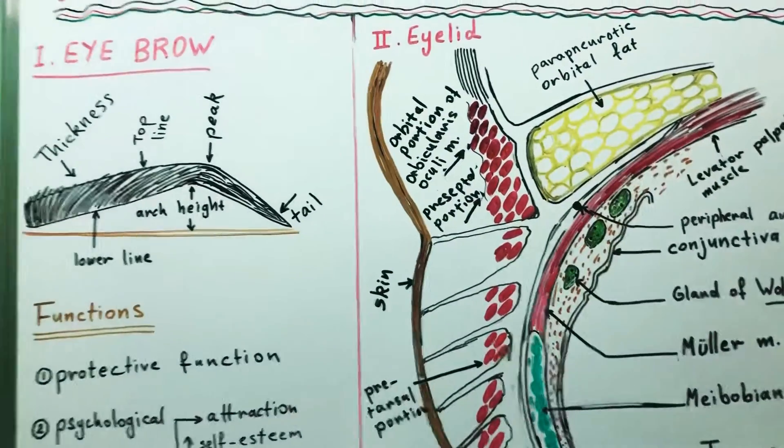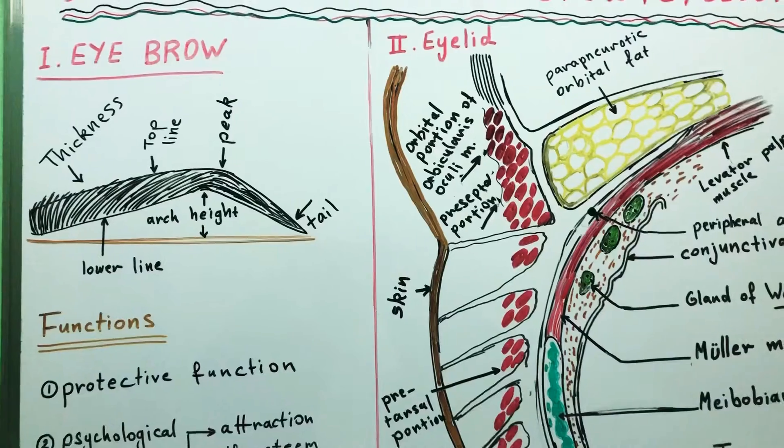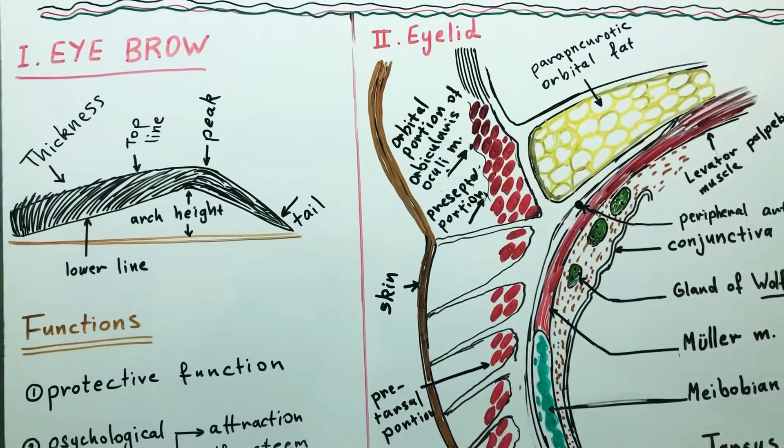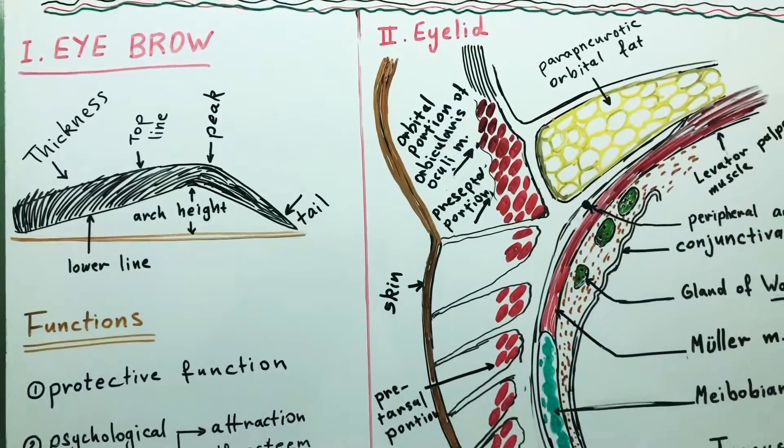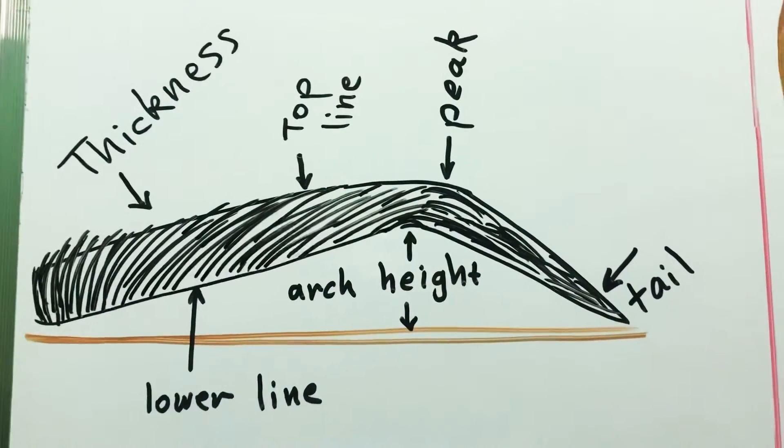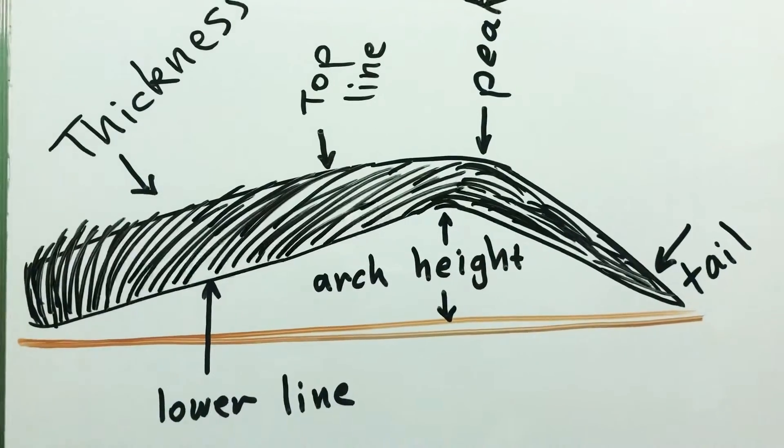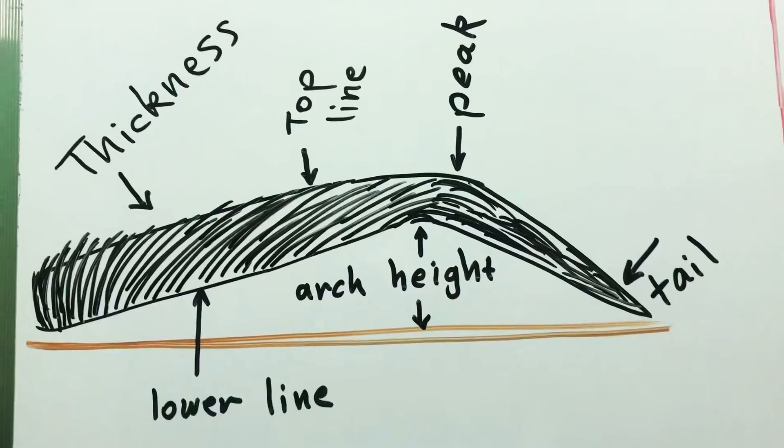What is eyebrow? Eyebrow is a region that involves thick hair on the eyebrow margin of the orbit. So the eyebrow is simply an area of thick hair growing on the brow margin above the eyes.